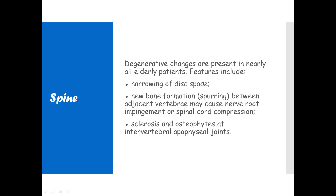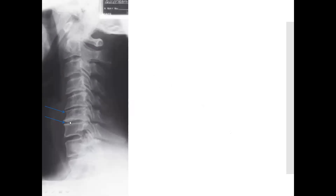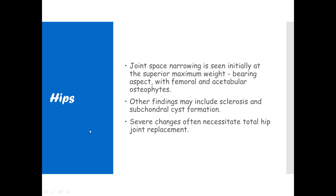Looking at the diagram, you can see narrowing of the disc space, osteophyte formation, sclerosis, and osteophytes at intervertebral apophysial joints. Notice the disc space here compared to this narrowed area here.